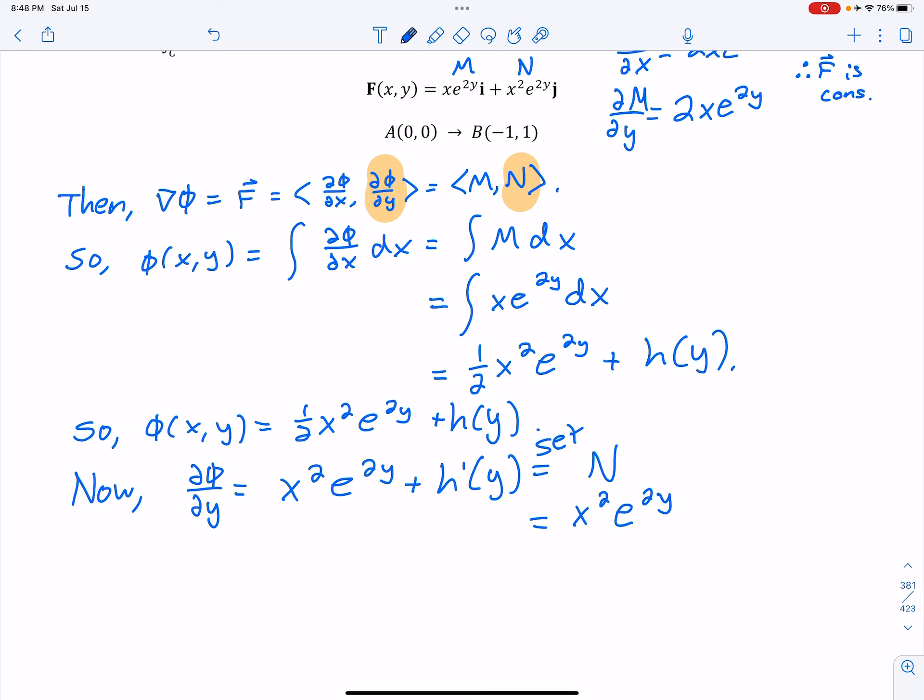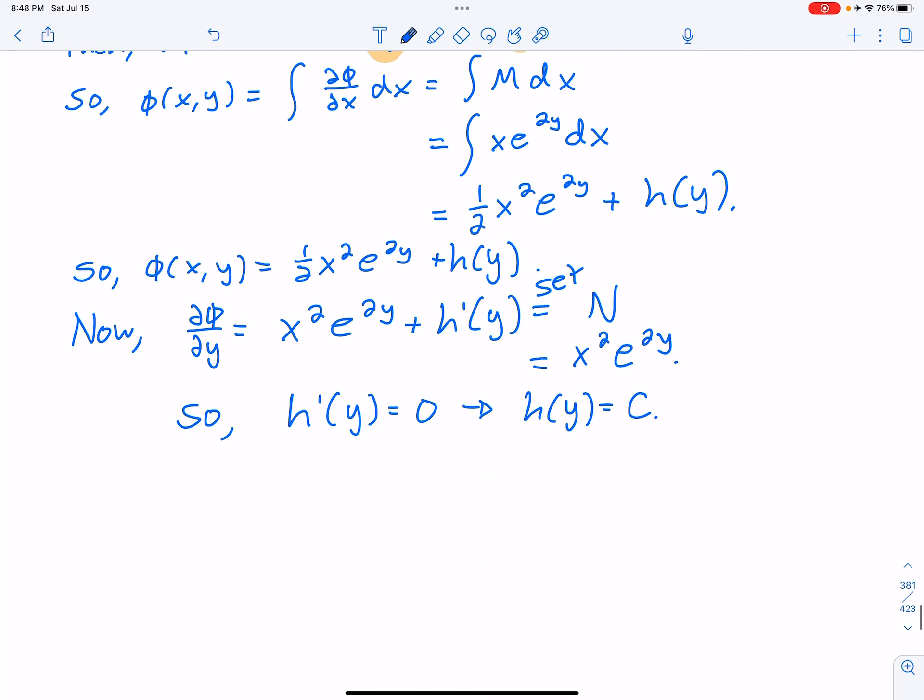That goes away. So H prime of Y is equal to 0, which means H of Y is just some constant. So now, or I guess we could say, thus, we have phi.